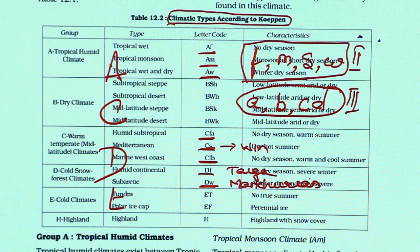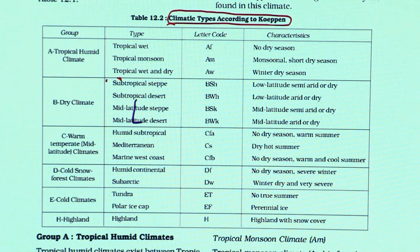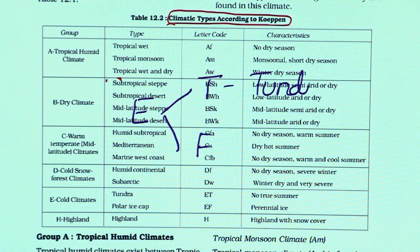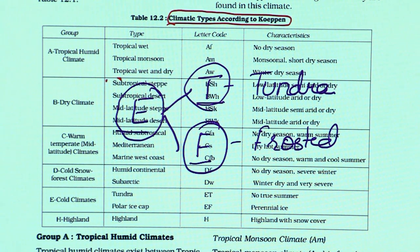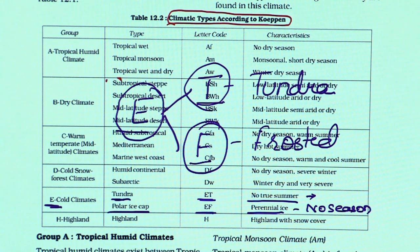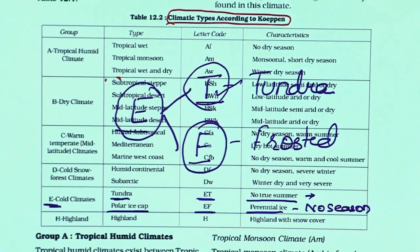E-type climate: the second-level symbols T and F (uppercase) are sufficient — no third level is needed. ET is tundra and EF is frosted polar ice cap. For B-type dry climate, capital W is desert — absolute arid — and capital S is steppe, representing semi-arid climate. Just like E-type, B has its own dedicated alphabetical symbols. BS is steppe and BW is desert.